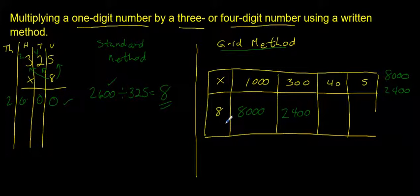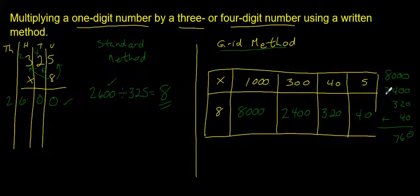8 times 40 is 320, and 8 times 5 is 40. So that means that 8 times 1,345 equals 10,760.